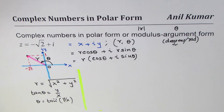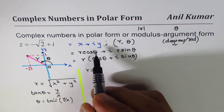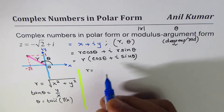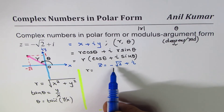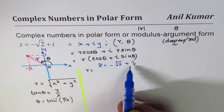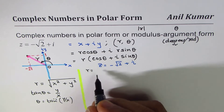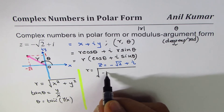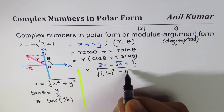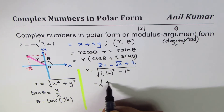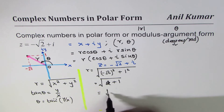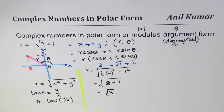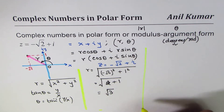Now let's find the value of r. We have z equals minus square root 2 plus i, so the x component is minus square root 2 and the y component is 1. Therefore r equals the square root of (minus square root 2) squared plus 1 squared, which is the square root of 2 plus 1, giving us r equals square root 3.